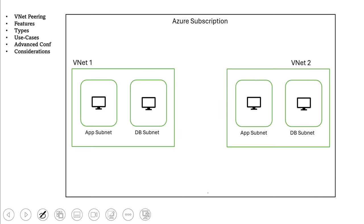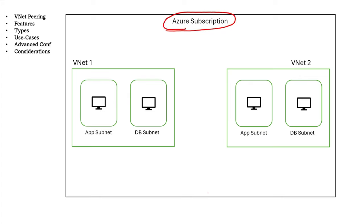Let's start. Let's assume a scenario where we have a single subscription. If we create a virtual network with multiple subnets, then the virtual machines within those subnets can connect to each other directly without any problem. By default, system routes are configured so that virtual machines within the virtual network can communicate with each other. If you want to manage or filter the traffic between these virtual machines, you can use a route table or a network security group.